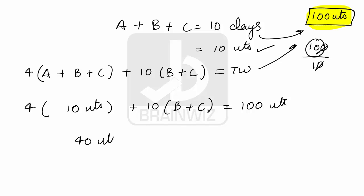40 units, so 40 units they have done in the beginning plus the remaining work was done by B and C in 10 more days. So let's check it out here that 10 days of B and C's work is equal to 100 units minus 40 units.